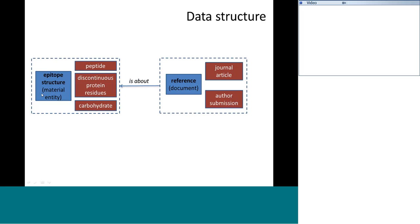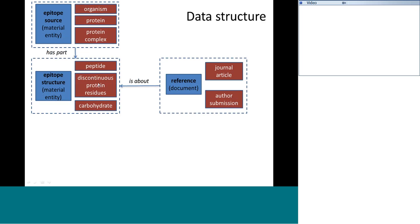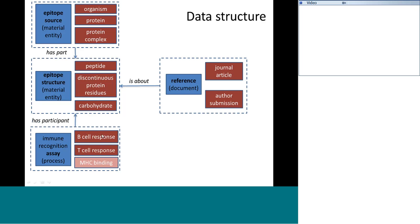In order for us to capture the epitope in the database, it must be described somewhere. We have two sources of data: either something comes from a journal article in the literature, or it comes from an author submission. The next most important thing about an epitope is that it comes from something — typically encoded in a specific organism like a virus or an allergen, and within that organism it typically comes from a protein or protein complex. In order for us to know that it is actually an epitope targeted by immune responses, it must have been characterized in some experiment.